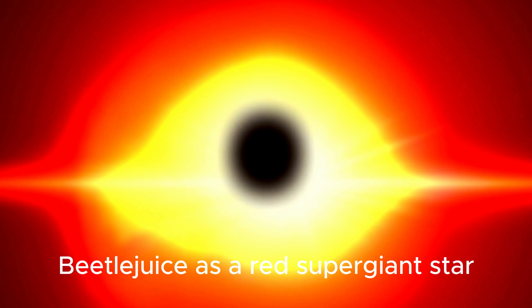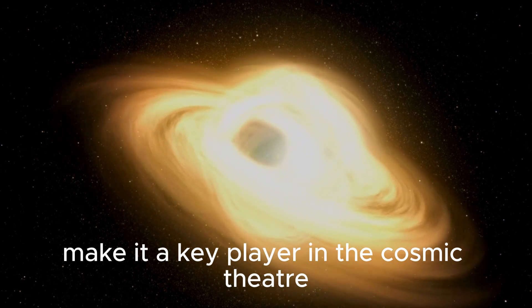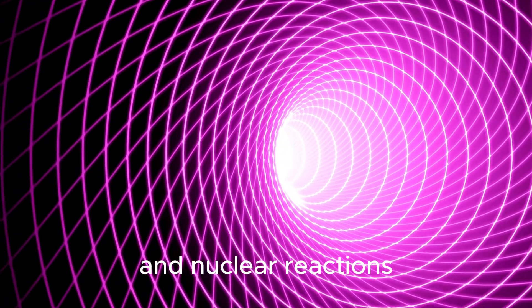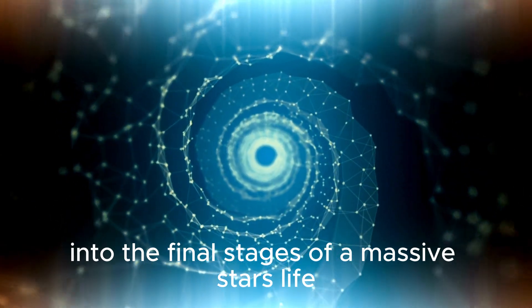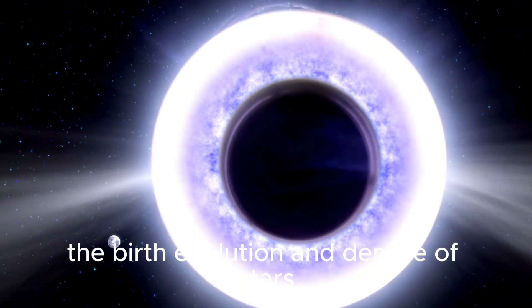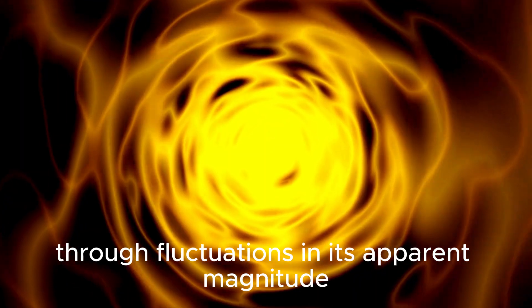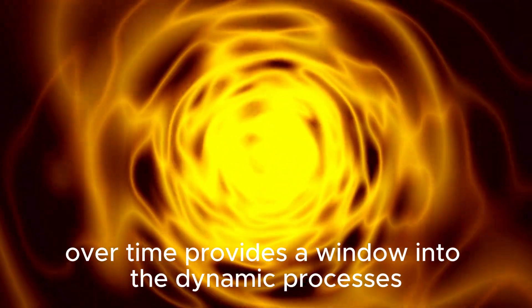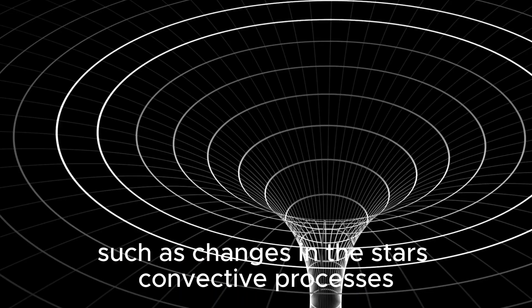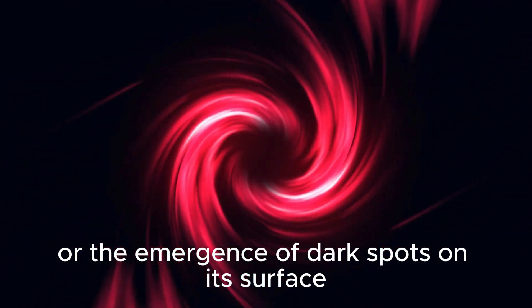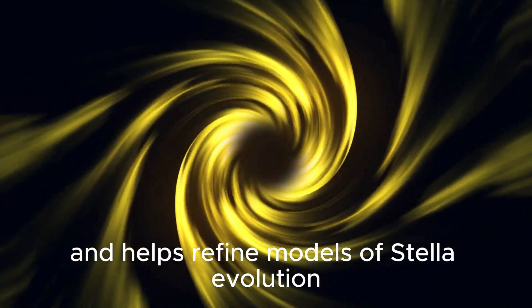Betelgeuse, as a red supergiant star, occupies a critical stage in stellar evolution. Its immense size and mass make it a key player in the cosmic theater where the forces of gravity, radiation pressure, and nuclear reactions interact to shape the destiny of stars. By studying Betelgeuse, scientists gain valuable insights into the final stages of a massive star's life. The variable brightness of Betelgeuse, observed through fluctuations in its apparent magnitude over time, provides a window into the dynamic processes occurring within the star. Understanding the underlying mechanisms behind Betelgeuse's variability enhances our knowledge of stellar dynamics and helps refine models of stellar evolution.